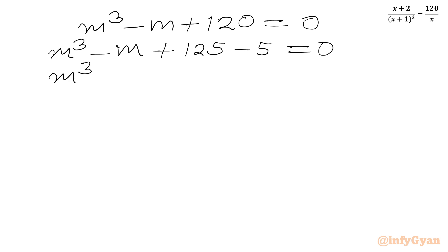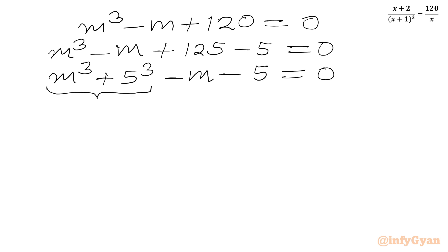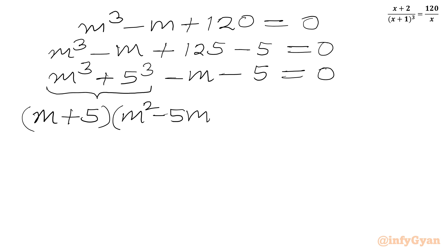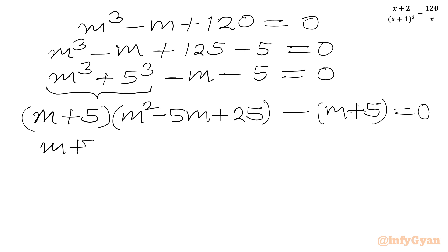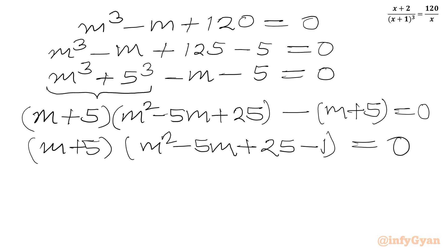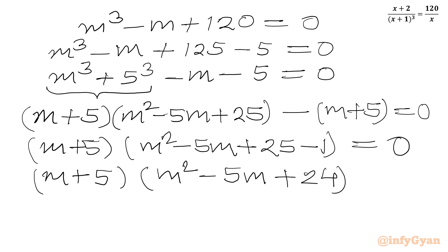We can write m³ and 125 as 5³, then group: (m³ + 5³) minus (m + 5) equal to 0. Using the sum of cubes formula, this gives (m + 5)(m² − 5m + 25), then taking minus common gives minus(m + 5). So overall (m + 5) is common, and we get (m + 5)(m² − 5m + 24) equal to 0.